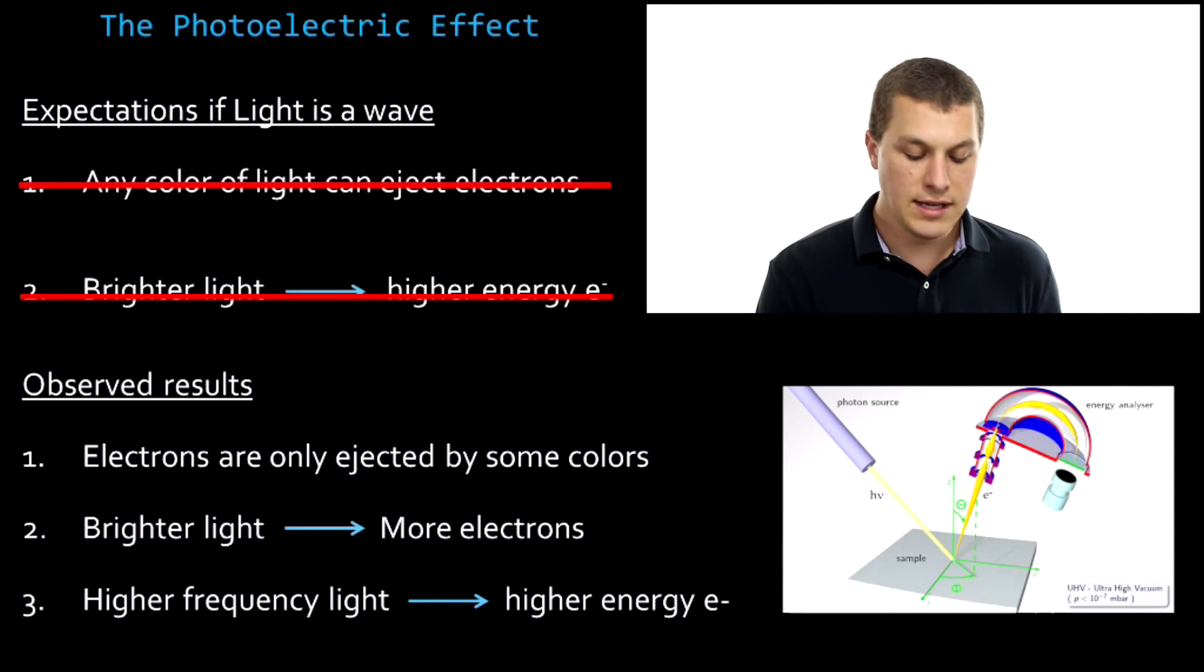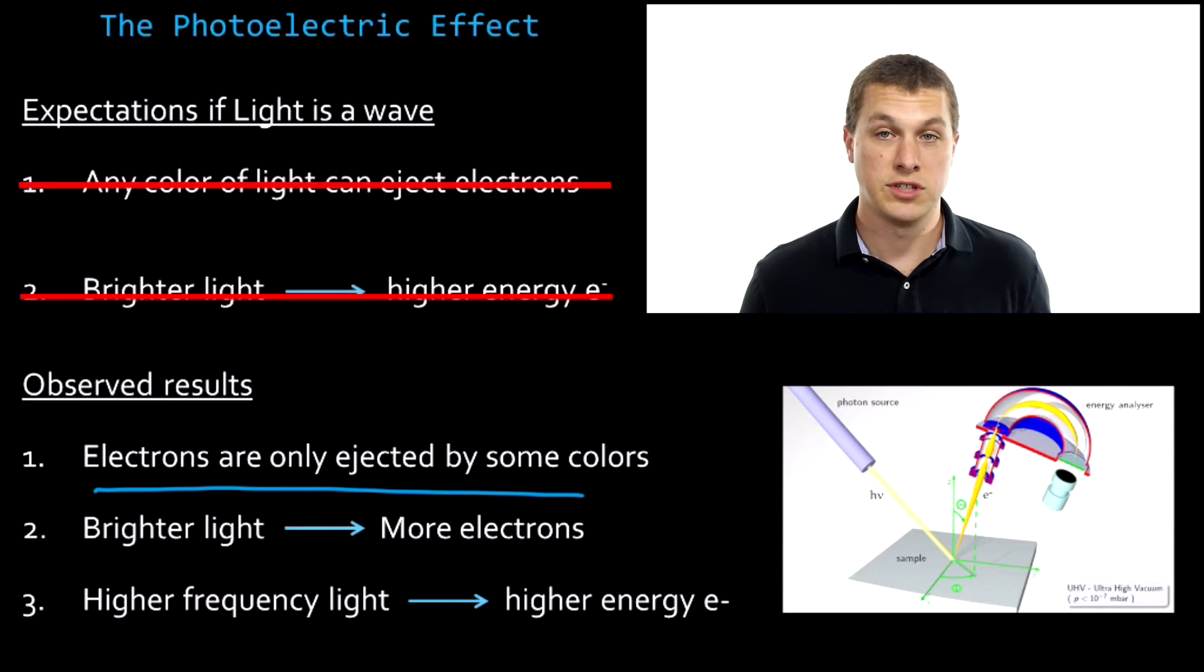What we actually saw is that electrons are only ejected by some colors. So it turns out that not all colors will eject electrons. You have to get far enough towards the blue side of the spectrum, what we know to be the higher energy side of the spectrum, before electrons start popping off. The second thing we saw is that brighter light didn't lead to higher energy electrons. Instead, it just led to more electrons. So those electrons were the same energy. They were moving the same speed when they came off, but there were more of them when we made the light brighter. Not what we'd expect if light was just a wave.